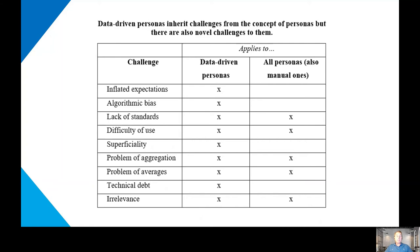Algorithmic bias: there is a naive view that you pump data into an algorithm and it gives you the answer — that is just not true. Algorithms have bias for a variety of reasons, and creators of data-driven personas have to realize and be cognizant of that algorithmic bias.